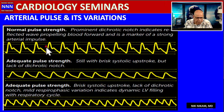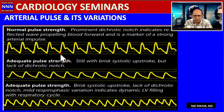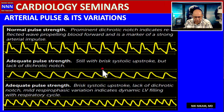Looking at different waveforms: the normal arterial pulse has a brisk upstroke, a brisk downstroke, a dicrotic notch, and then a gradual decline to the diastolic baseline pressure. There are also situations where the upstroke can be slow and lazy.